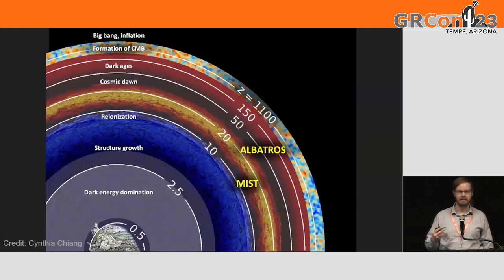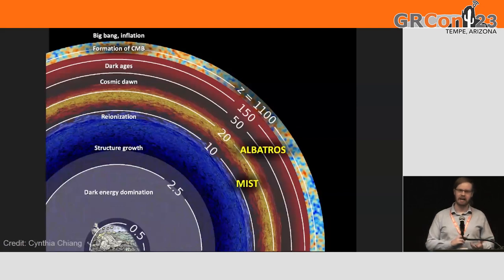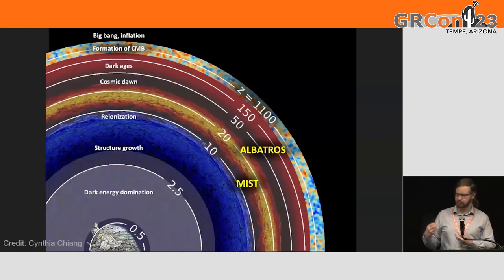Our system is set up to measure two different parts. We've got two different antennas measuring two different parts — these are the two under active development that I've been working on. There's the Albatross antenna and the MIST antenna. The Albatross antenna is mainly used to probe the cosmic dark age, and the MIST antenna probes around cosmic dawn when the first stars are starting to appear and re-ionization is beginning.